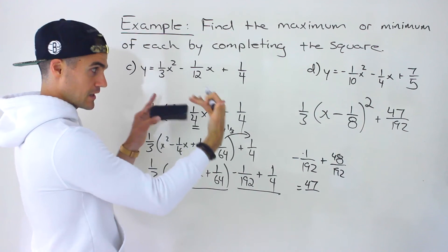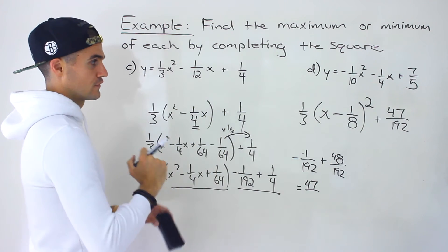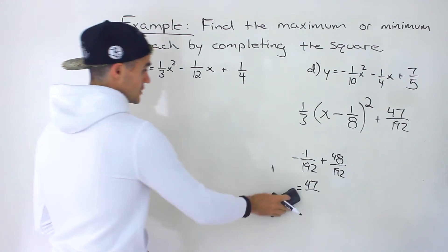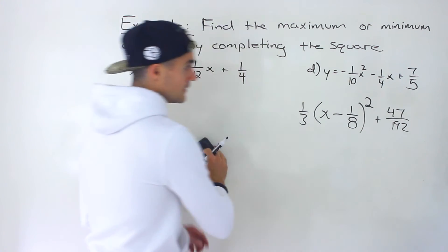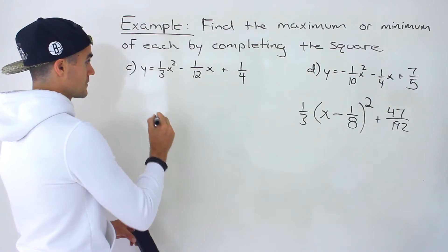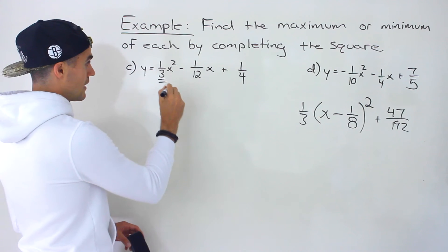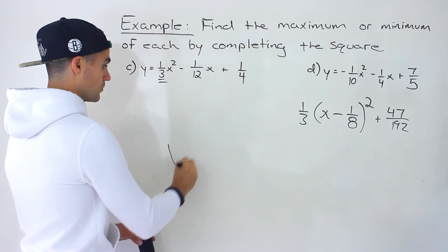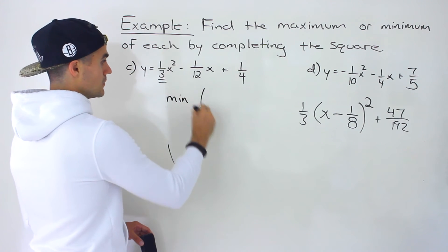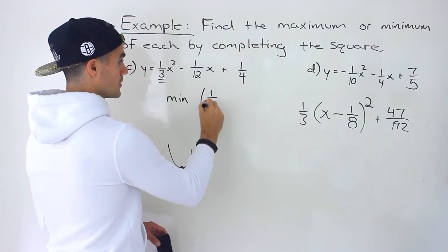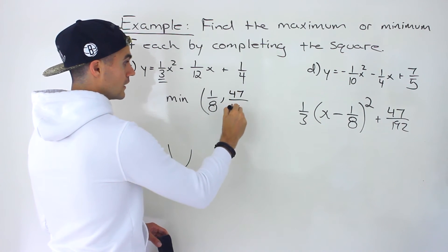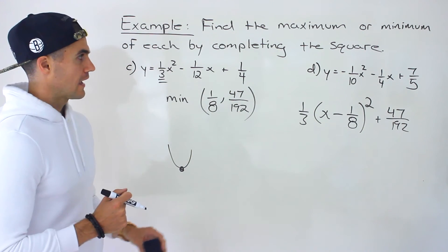That ends up being the vertex form with fractions — a lot more complex, but the same overall process. Since the 'a' value is positive, the parabola opens up so we have a minimum. The minimum point — the full vertex — is positive one-eighth (the sign flips) and 47-over-192.